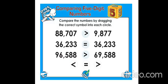See the second example: 36,233 and 36,233. Both numbers are the same, so they have equal value. We write 36,233 is equal to 36,233. See the last example: 96,588 and 69,588. The ten-thousands and thousands places are 96 and 69 respectively. Since 96 is larger than 69, 96,588 is greater than 69,588. This is how we compare two numbers.